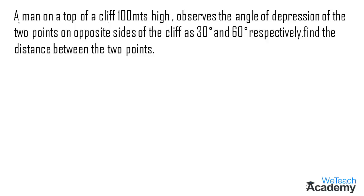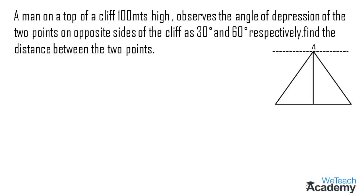A man on the top of a cliff of 100 meters high observes the angle of depression of two points on the opposite side of the cliff as 30 degrees and 60 degrees respectively. Find the distance between the two points. Let us draw a cliff of 100 meters. Here AB is the cliff of 100 meters, and the two points on the other side of the cliff are C and D.